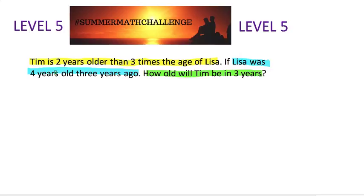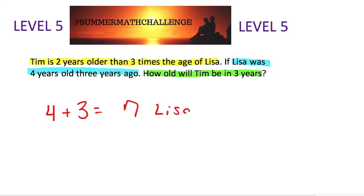Alright, let's look at the first yellow section. Tim is 2 years older than 3 times the age of Lisa. So to figure out Tim, we need to find Lisa. It says if Lisa was 4 years old 3 years ago. So 3 years ago she was 4 years old. If we add the 4 and the 3, we get that Lisa now is 7. Right now, today, she's 7 years old.